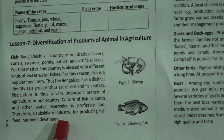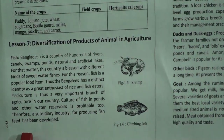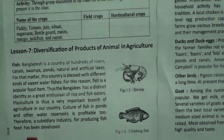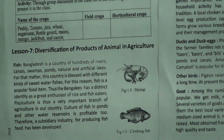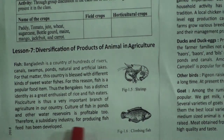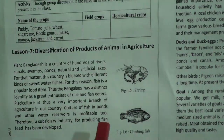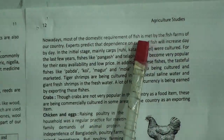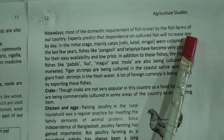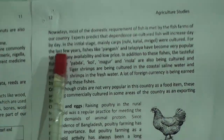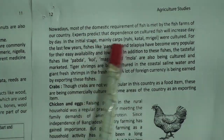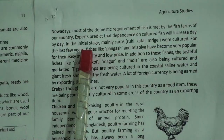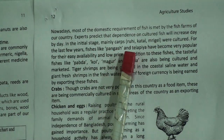Culture of fish in ponds and other water reservoirs is profitable. Therefore, a subsidiary industry for producing fish feed has been developed. Nowadays, most of the domestic requirement of fish is met by the fish farms of our country. Experts predict that dependence on cultured fish will increase day by day.